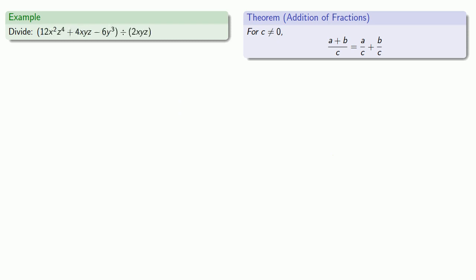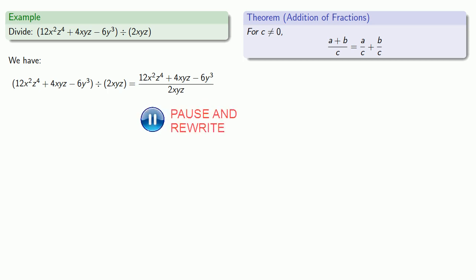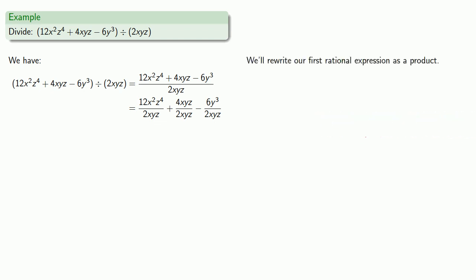We could do this with more terms. We'll rewrite our division as a fraction. Since we're adding and subtracting in the numerator, we can rewrite this as an addition or subtraction of fractions with the same denominator. Now each of our fractions is just a product over a product, so we can simplify by rewriting each fraction as a product. We'll rewrite our first rational expression as a product, separating the variables.